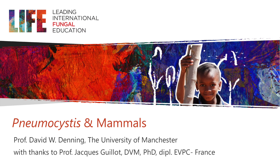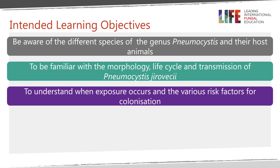Welcome. Today I'm going to tell you a little bit about Pneumocystis, which is an organism that causes infections in mammals throughout the world and is also an important pathogen, usually in immunocompromised patients. I'm going to summarise what we know about the organism and its biology and something about its transmission as a prelude to learning more about the disease it causes with other slide sets.